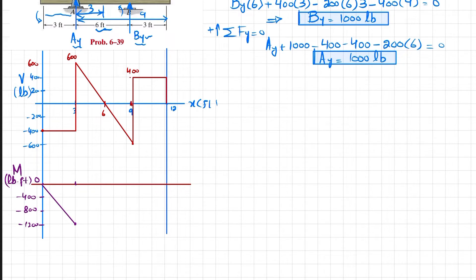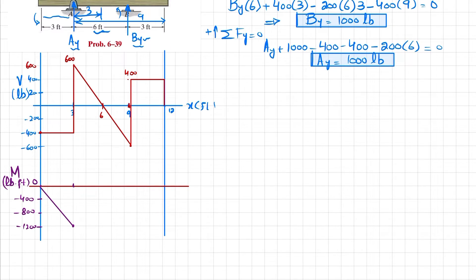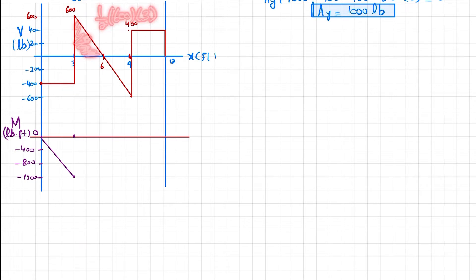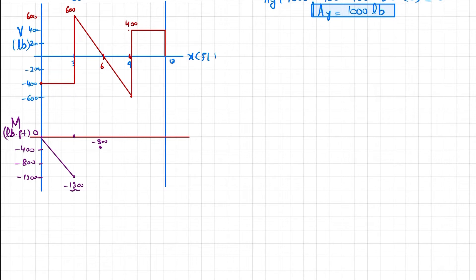The second area under the shear force diagram is triangular: one-half times 600 times 3 equals 900, and this is positive. So minus 1200 plus 900 brings the moment to minus 300 at the midpoint (6 feet). Since the shear force is a first-degree line, the bending moment is a second-degree (parabolic) curve with a clockwise-direction curvature.